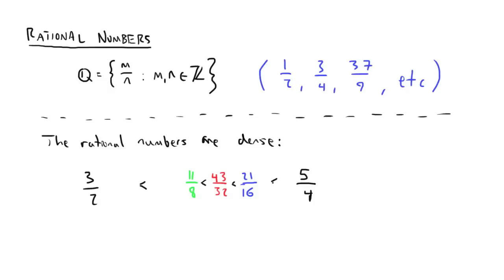But they are still the same size as the natural numbers. To see this, we start by writing all the rational numbers in an infinite grid. Every rational number is in here somewhere.